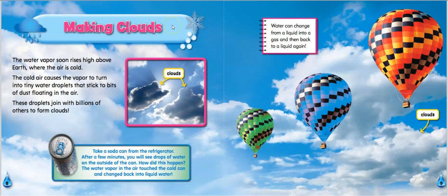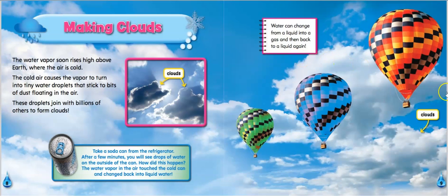Making clouds. The water vapor soon rises high above the Earth where the air is cold. The cold air changes the vapor to turn into tiny water droplets that stick to bits of dust floating in the air. These droplets join with billions of others to form clouds. Here's another experiment to try. Take a soda can from the refrigerator. After a few minutes, you will see drops of water on the outside of the can. The water vapor in the air touched the cold can and changed it back into liquid water. Water can change from a liquid into a gas and then back to a liquid again.